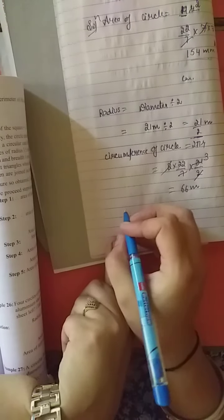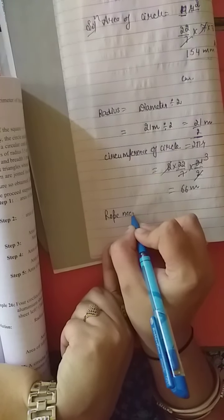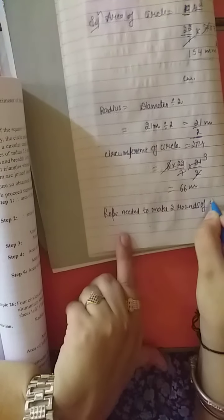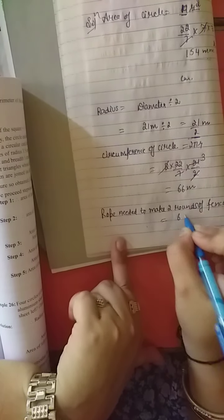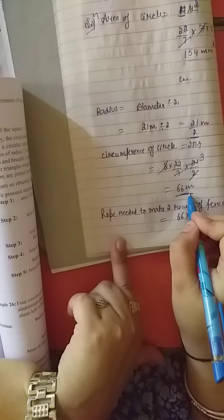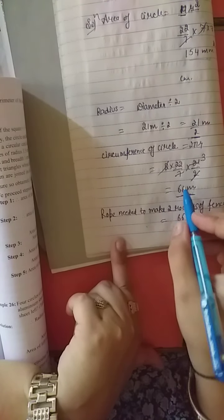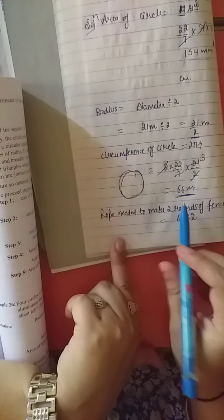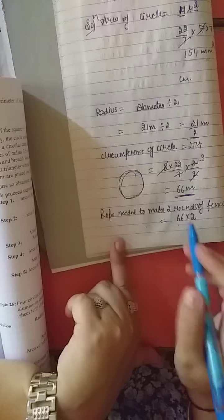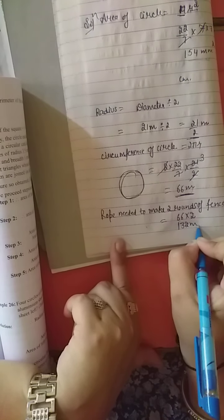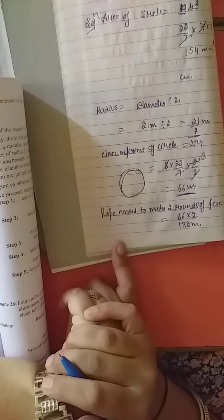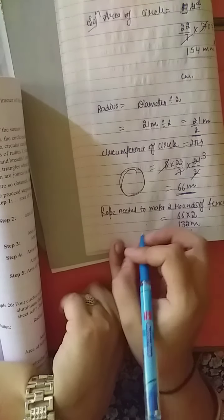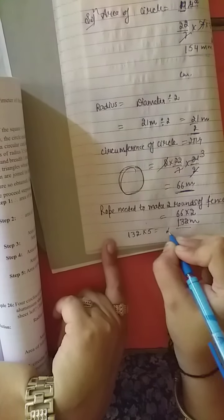Now we find the rope needed to make 2 rounds of fence: 66 × 2 = 132 metres. We also find the cost of rope at ₹5 per metre: 132 × 5 = ₹660.